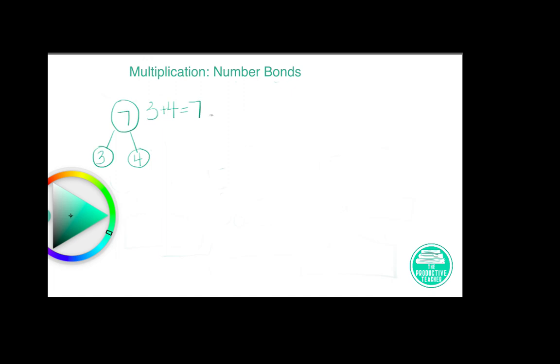Well, we use number bonds in multiplication, too. But they look a little bit differently. So let's say that we had three times four equals 12. So we're using the same numbers in the number bonds, but the number bonds are going to look very different.